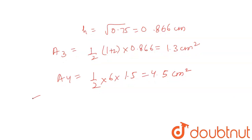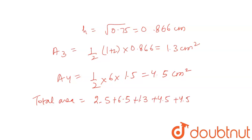So what was the area of 1? 2.5. Area 2: 6.5. Area 3: 1.3. Area 4: 4.5. And area 5: 4.5. Total: 19.3 cm². I hope you understand the solution. Thank you.